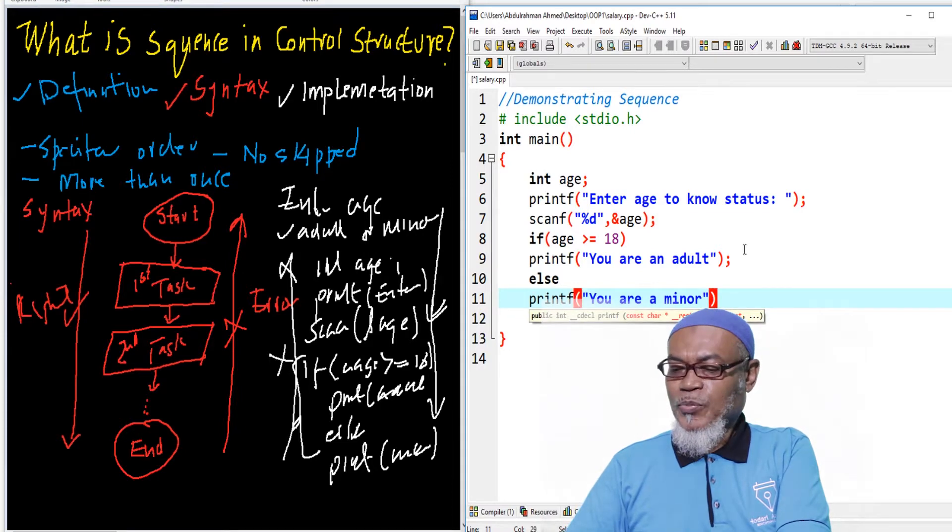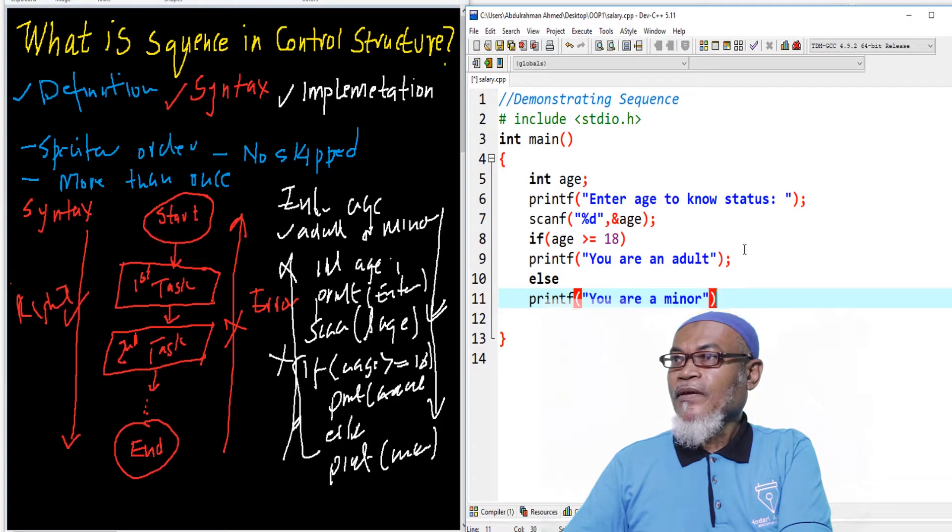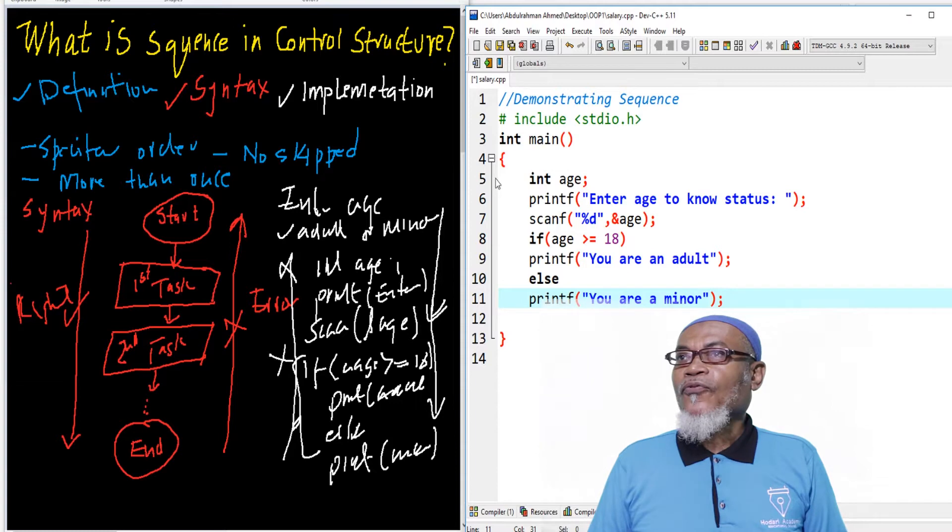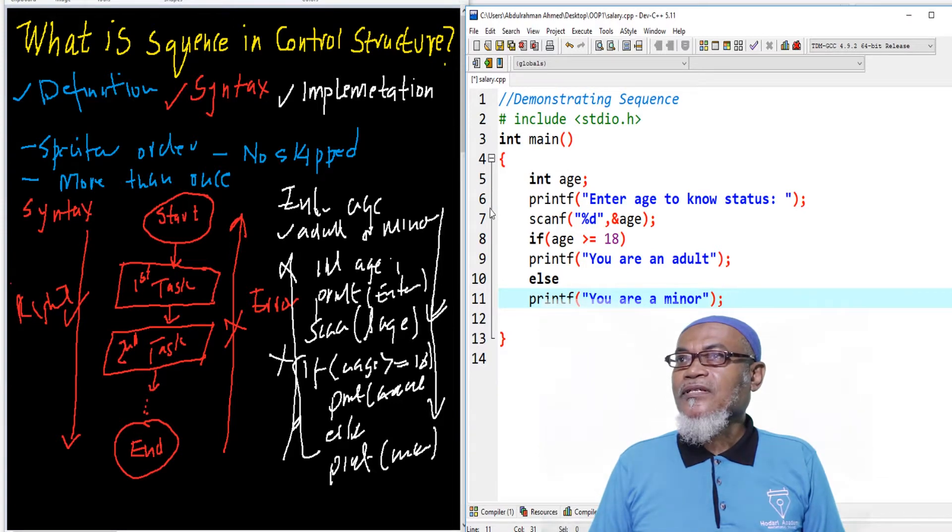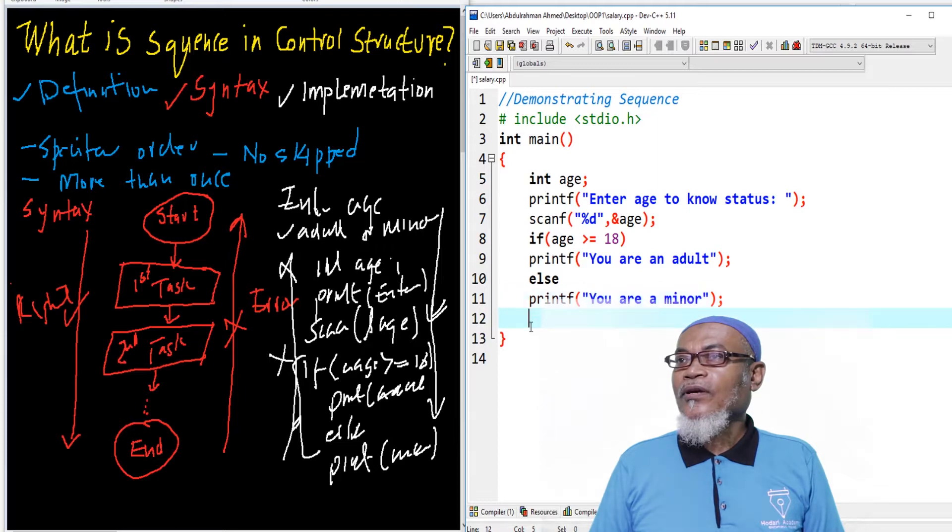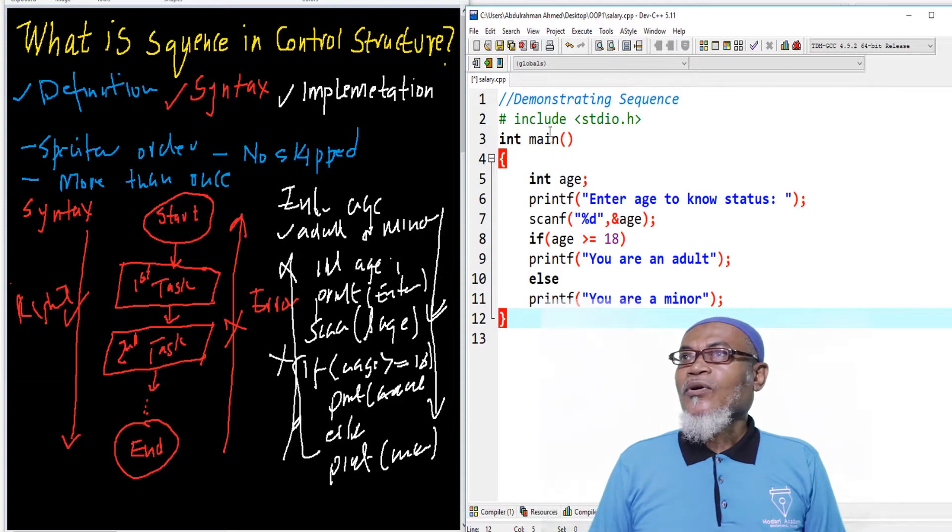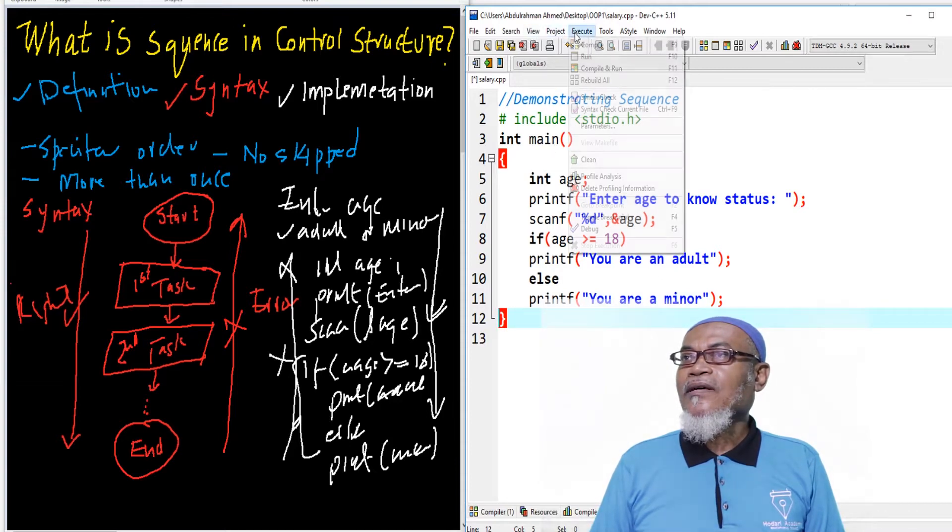So this particular order is actually very important for our execution. From line 5, 6, 7, 8, 9, 10, and 11, we should follow this particular order precisely. If we don't, it will bring up an error. So let's first run and see that there is no error.